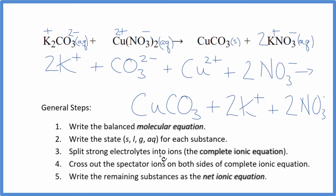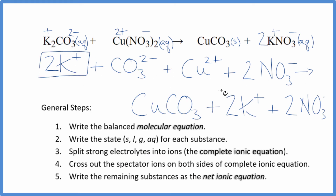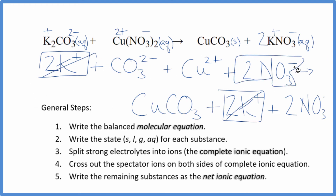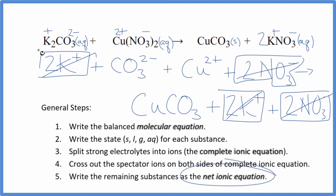Now we can cross out those spectator ions that appear on both sides. In the reactants, I have two potassium ions — same in the products. Those are spectator ions; cross them out. In the reactants, I have two nitrate ions — I also have two nitrate ions in the products. Again, spectator ions. We cross those out, and we're left with the net ionic equation for potassium carbonate plus copper 2 nitrate. I'll clean this up, write the states in, and we'll have our net ionic equation.